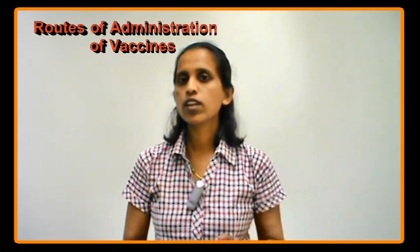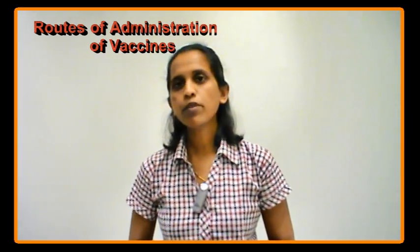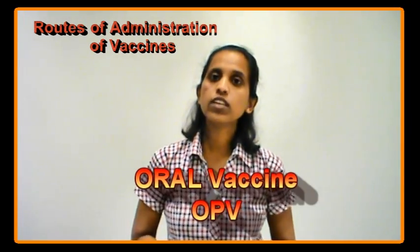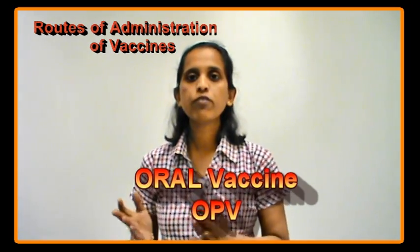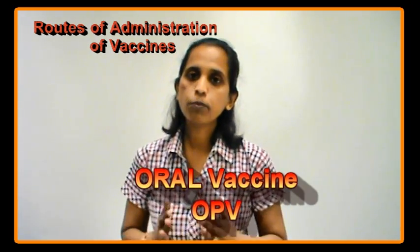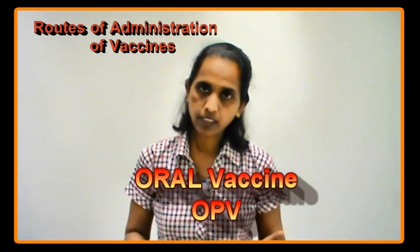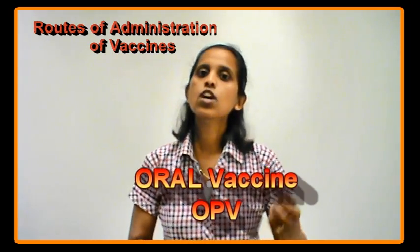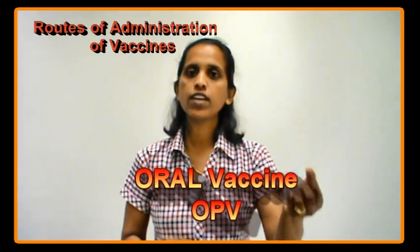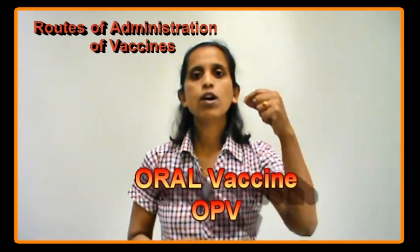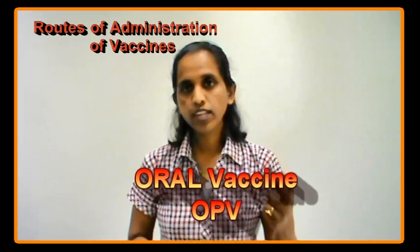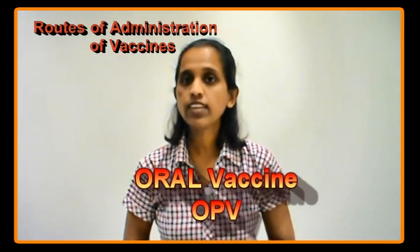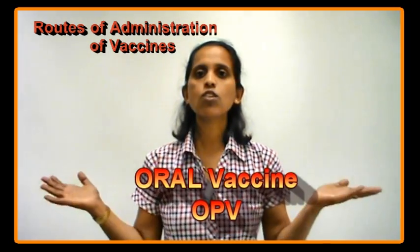Let's look at the oral vaccine. The example of oral vaccine I'm going to give today is the most common one — OPV, or oral polio vaccine. While administering this vaccine, two drops of the vaccine are put into the mouth of the child who is to be immunized against the disease poliomyelitis.